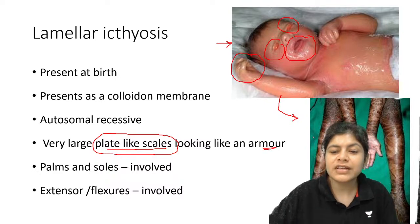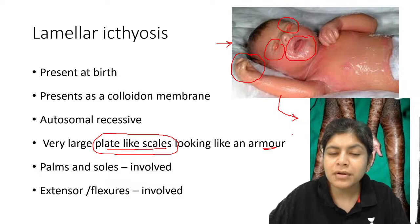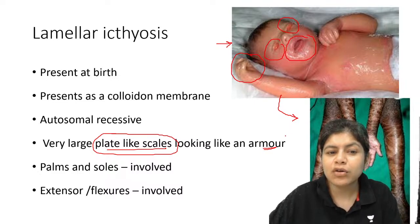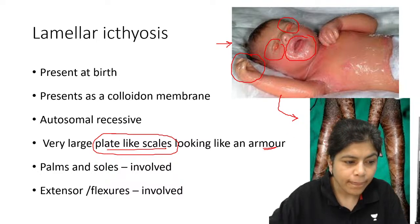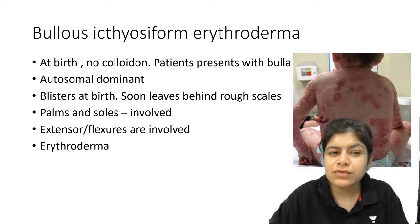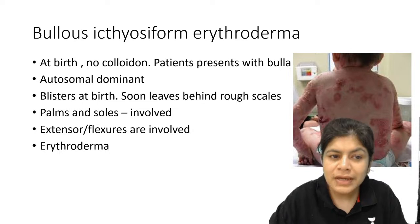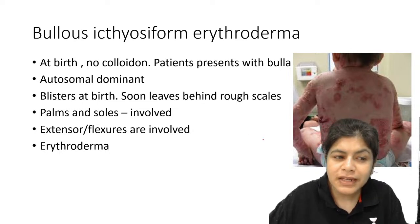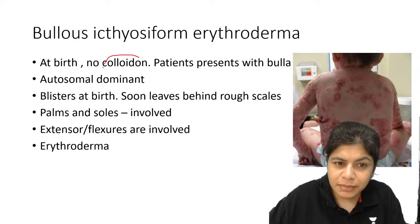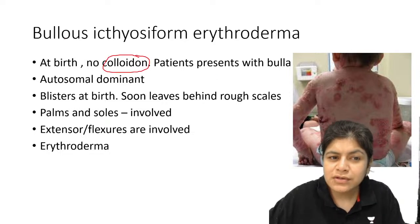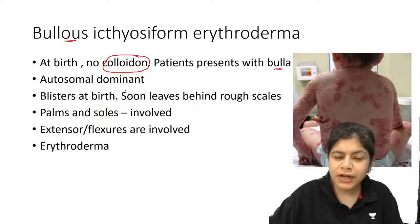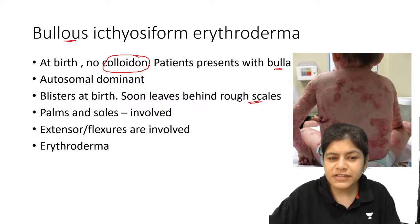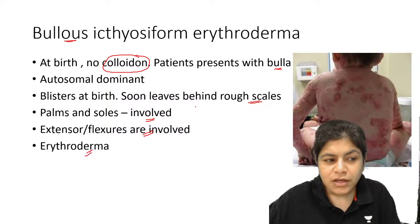The collodion membrane disintegrates and the child later develops lamellar ichthyosis — characterized by large plate-like scales resembling armor. Extensors, flexors, palms, and soles are all involved. Bullous ichthyosiform erythroderma presents at birth with no collodion membrane. It is autosomal dominant, presenting with bullae that leave behind rough scales. Palms, soles, extensors, and flexors are all involved, and the patient is in erythroderma.